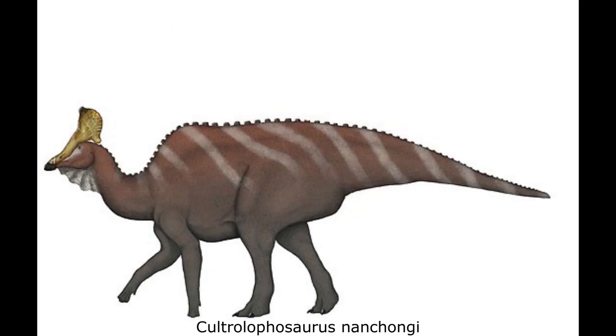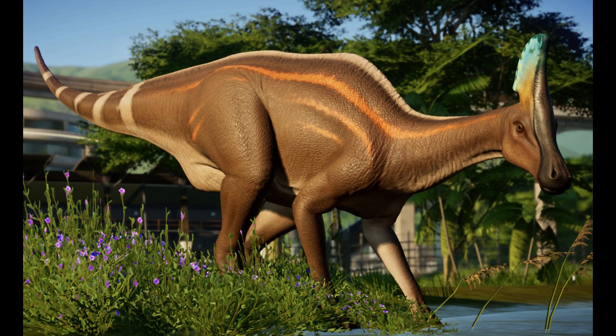A potential prey item for the tyrannosaur was an 8-meter lambeosaurine hadrosaurid known as Kultralophosaurus nanchongai. This hadrosaur possessed a distinctive blade-shaped head crest, similar to that of its close relative Olorotitan. Multiple specimens of this dinosaur have been found in close proximity, suggesting potential herding behaviour.